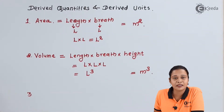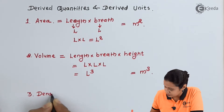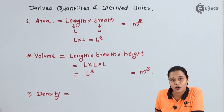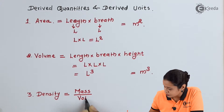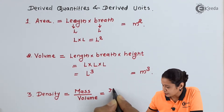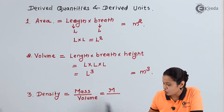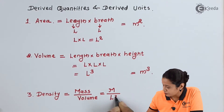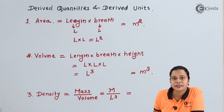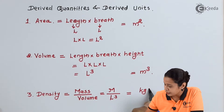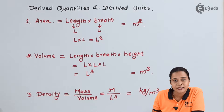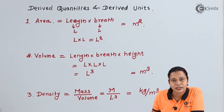The third quantity we will take is density. We know density is mass upon volume. Mass can be expressed in terms of m and volume is L cubed. The unit of mass is kilogram and unit of volume is meter cube. Hence the unit of density is kilogram per meter cube.